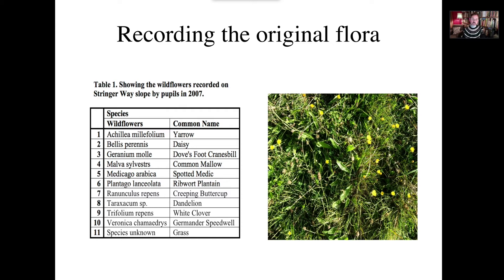The first thing we did was record the wildflowers we already had in that area. I knew that when schools were told they could apply for £10,000, many would be going for planting woodlands or creating ponds — but not many would be applying to topographically modify chalk grass and manipulate microclimate at ground level for early successional chalk grass and butterflies. I was delighted that we got the £10,000. We found 10 wildflower species in that half football-pitch-sized area.